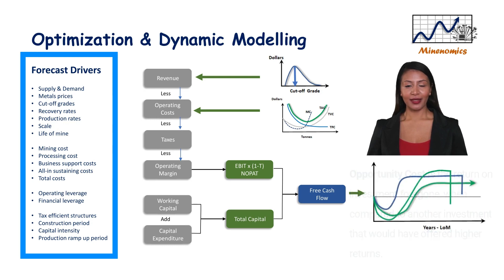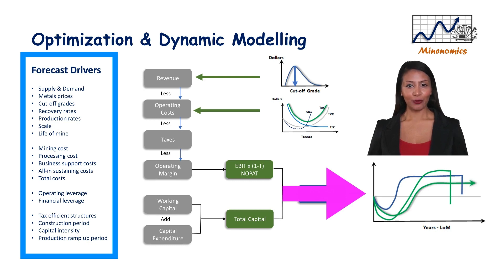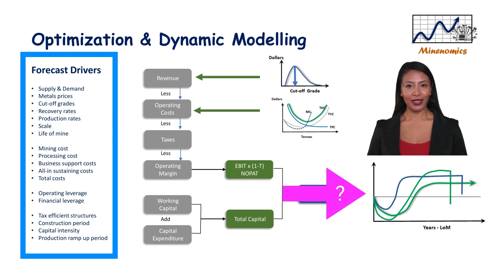Multiple cash flow profiles can be generated for a single deposit based on the mining and processing paths selected. The trick is to discover the mining and processing path that maximizes cash flows for a given ore body. To do this we have to model the ore deposit and make a myriad of technical and economic assumptions. To achieve this, we have to understand the sweet spot of a peculiar ore body — by determining the cut-off grade and the optimal economic costs to produce at, taking into account all the value drivers, we can estimate the maximum discounted cash flow we can reasonably expect.